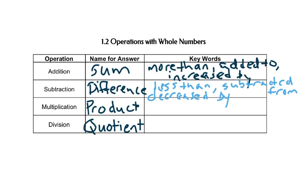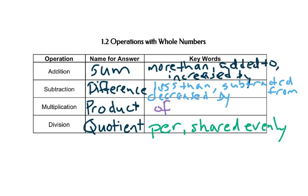If we're talking about multiplication, we might use the word "of," and we'll talk about some other special multiplication words in a little bit. For division, we might use the word "per," or problems that talk about things being shared evenly. If we're splitting something into even pieces, it's division. And for multiplication, if we're talking about repeated values or repeated addition, that again is multiplication.